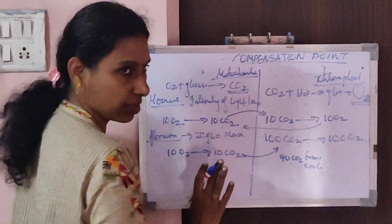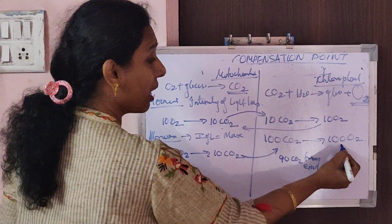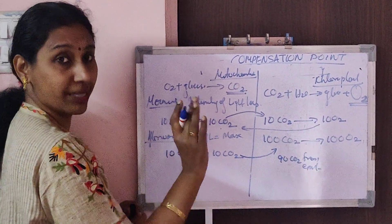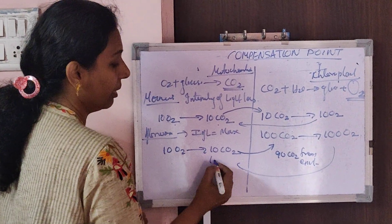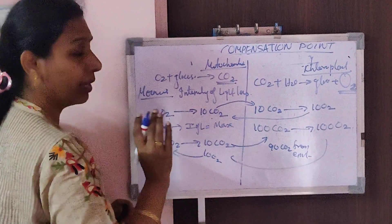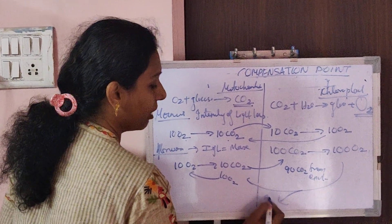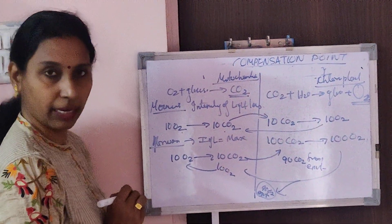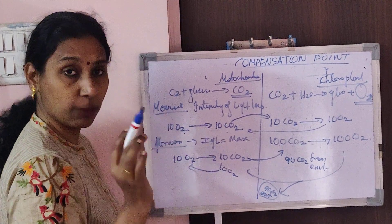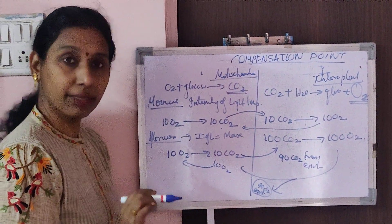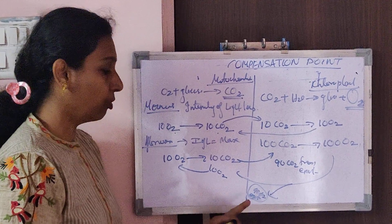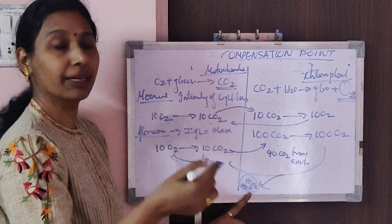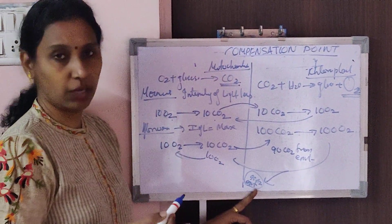The chloroplast releases 100 oxygen. It tries to give all of it to the mitochondria, but mitochondria says no — it requires only 10 oxygen. So out of the 100, 90 oxygen is released into the environment. During afternoons, if you are sitting under a tree, you are going to get a lot of oxygen, because the intensity of light is high and so the photosynthetic rate is high.